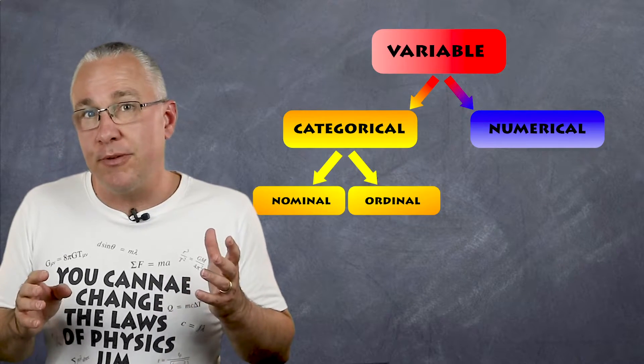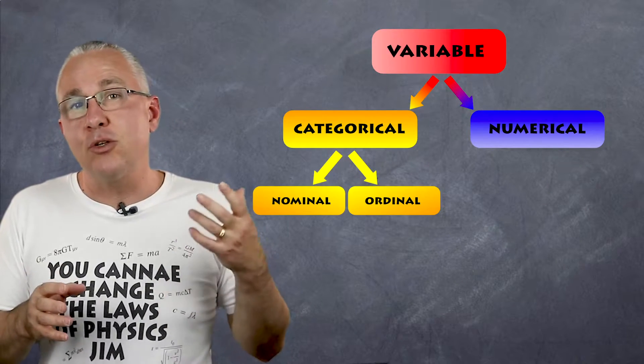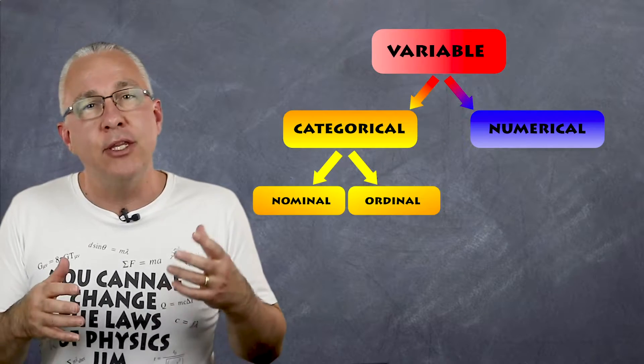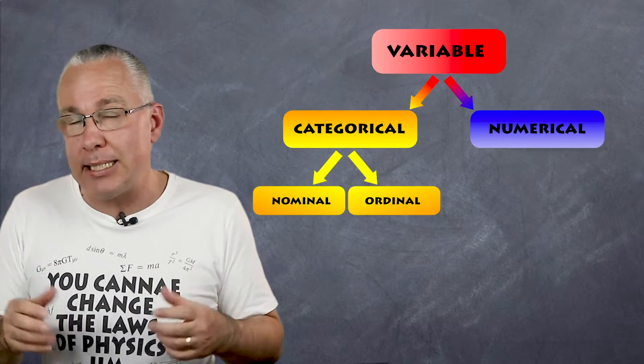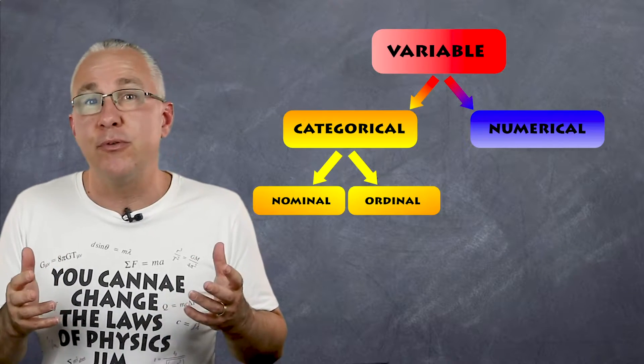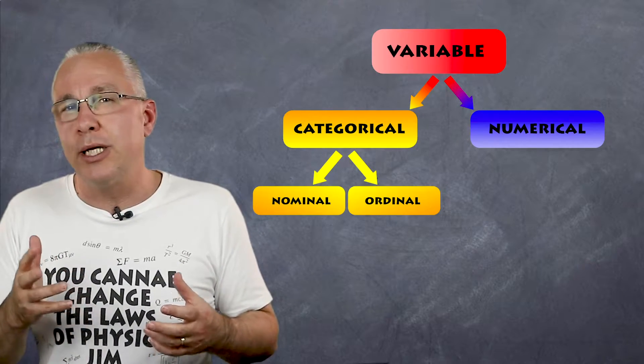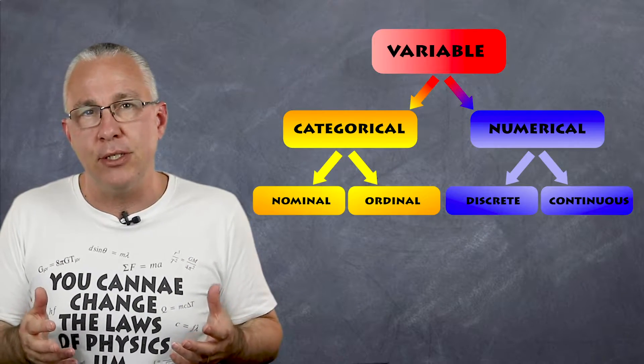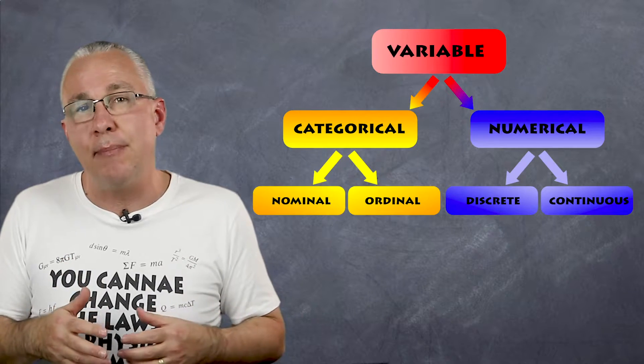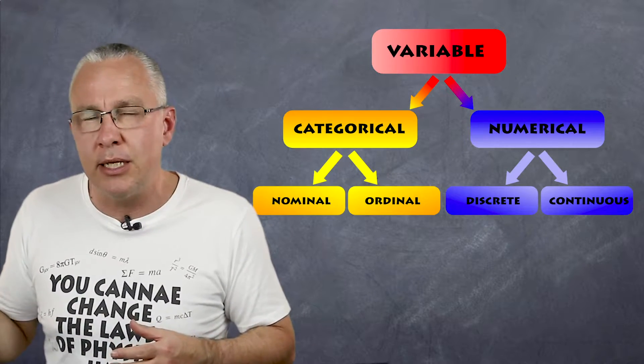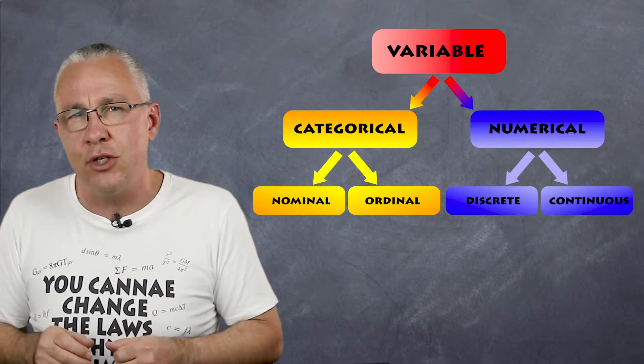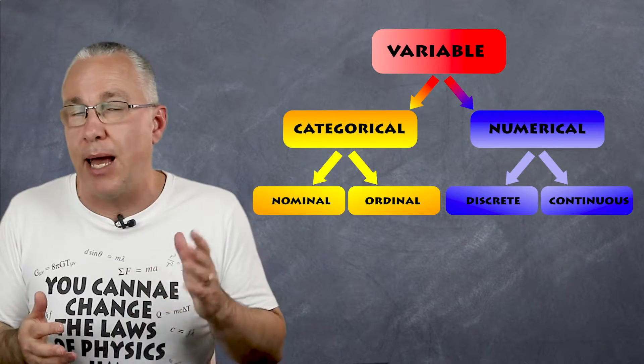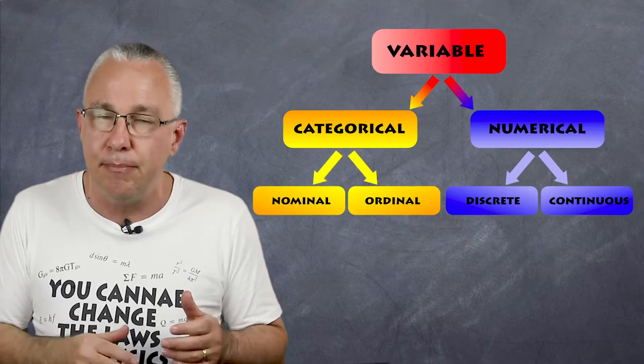We can divide both of those into two smaller subsets. The first one in terms of categorical is nominal. In other words it has a name associated with it and the order doesn't really matter. The second one is ordinal, which means the order is important. When we talk about numerical types of information, you can divide that up into discrete, which means it has set values, or continuous, which means it can be any value from A to B and anything in between.